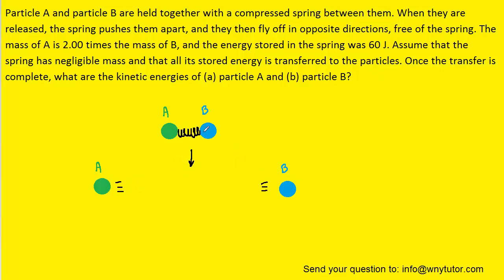We know that initially the only form of energy present is potential energy - the potential energy stored in the spring. But once the particles are sent flying apart, we have kinetic energies, and we can label the kinetic energy of particle A as k1 and the kinetic energy of particle B as k2.